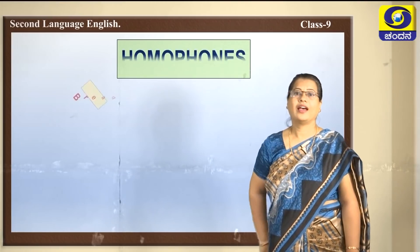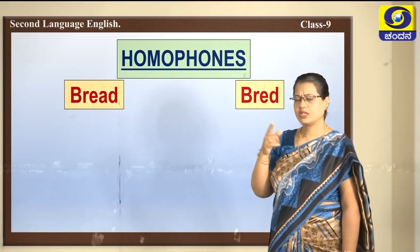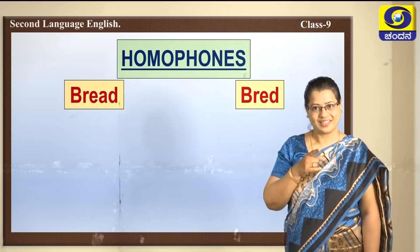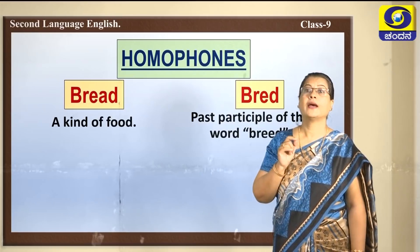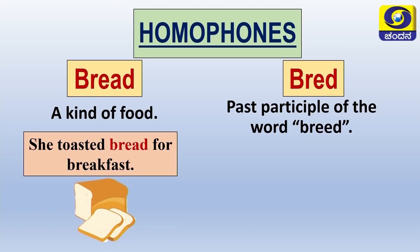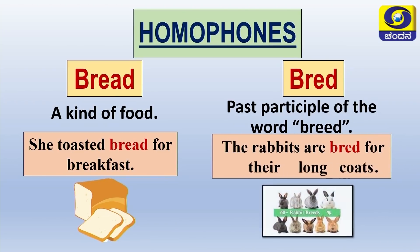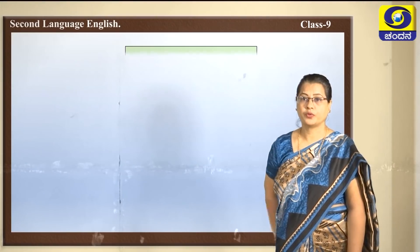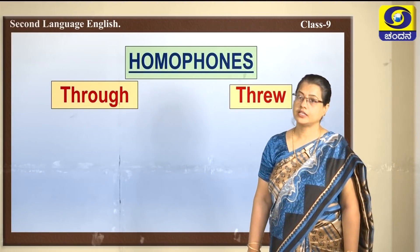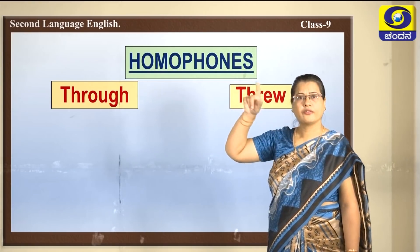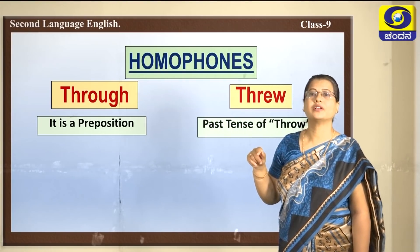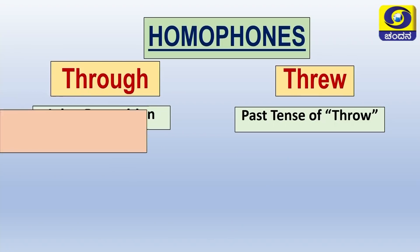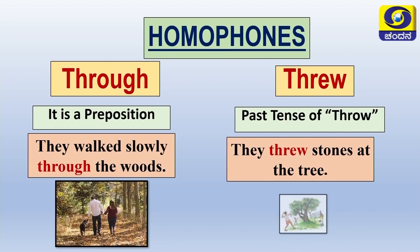Let us see the answers. BREAD (B-R-E-A-D) — a kind of food. Usage: 'She toasted bread for breakfast.' BRED (B-R-E-D) — past participle of the word breed. Usage: 'The rabbits are bred for their long coats.' THROUGH (T-H-R-O-U-G-H) — a preposition. Usage: 'They walked slowly through the woods.' THREW (T-H-R-E-W) — past tense form of the word throw. Usage: 'They threw stones at the tree.'